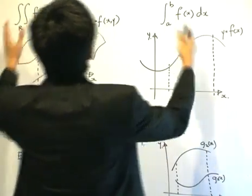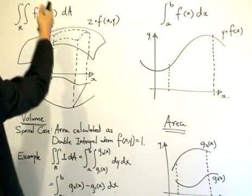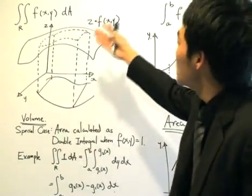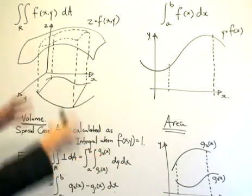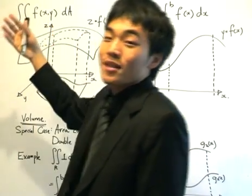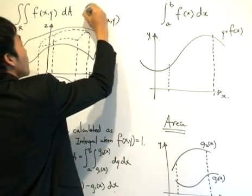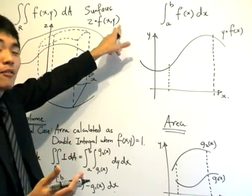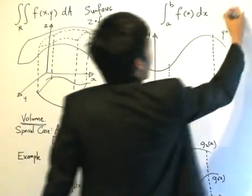The double integral is written as the double integral of f(x, y) over region R with respect to area dA. When dealing with the double integral we are dealing with three-dimensional space. So comparing the two: a function of x and y gives us a surface, because the function depends on both independent variables x and y — for each point (x, y) we get a surface. For the single integral, we get a curve.